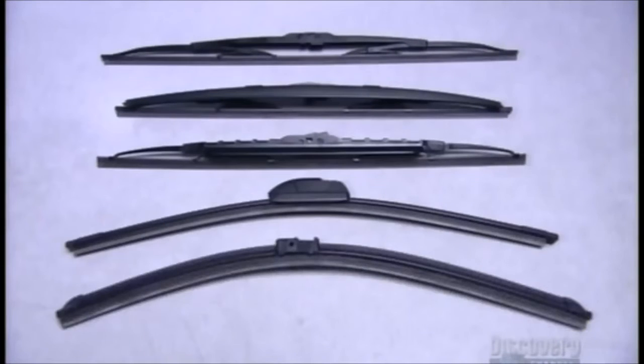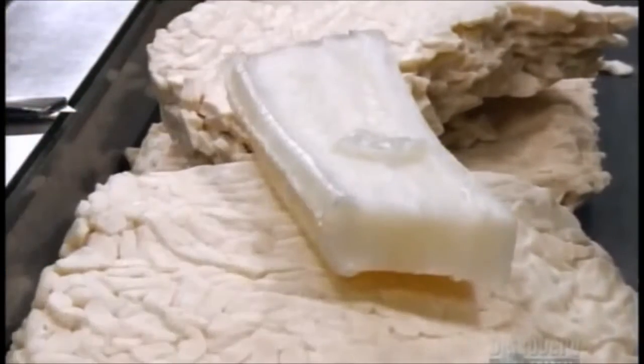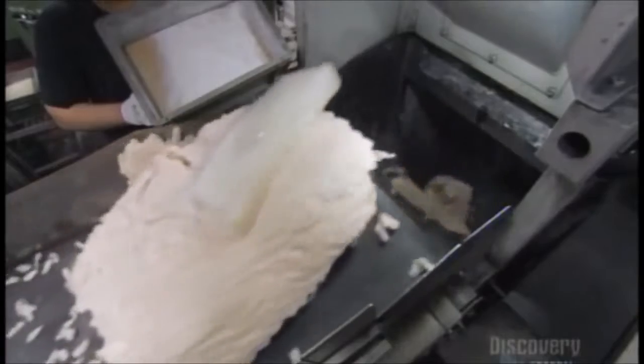These windshield wipers all have a rubber wiping blade. To make it, workers load natural rubber into a mixer that breaks it down into fine grains.